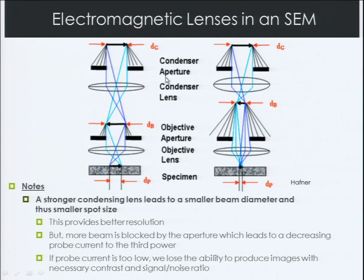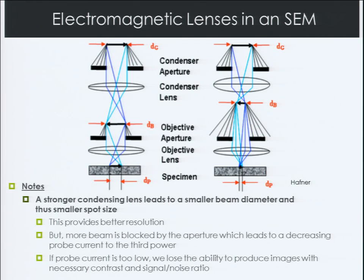For the lens diagram: we have a condenser lens, some apertures, then an objective lens, and then the final specimen. We use that final objective lens to focus the beam. A stronger condensing lens gives a smaller beam diameter and smaller spot size, yielding better resolution. However, more beam will be blocked by the aperture. If that occurs too much, we get decreased probe current. If the probe current is too low, we lose the ability to produce images with necessary contrast and signal-to-noise ratio. There are many different factors to consider when setting up your FESEM depending on what you want to get from your image.